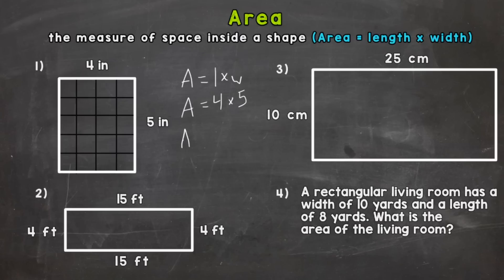So after we plug in we solve in order to calculate the area. So four times five gives us 20.